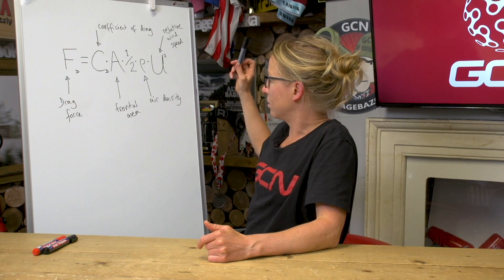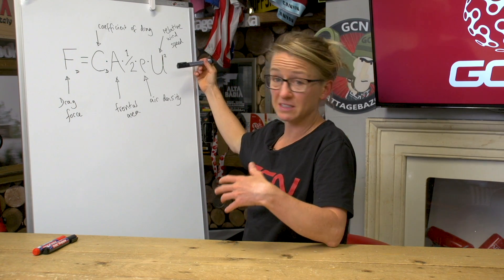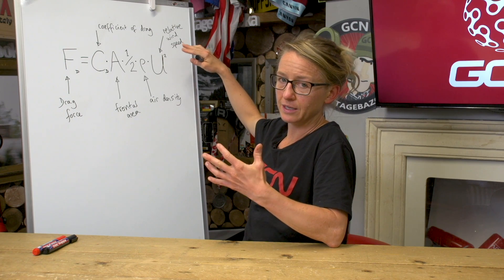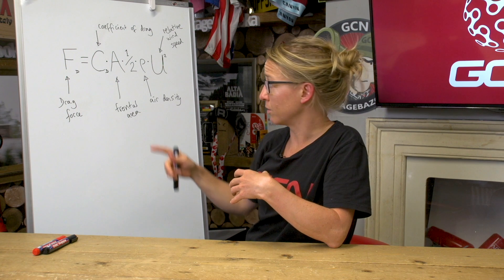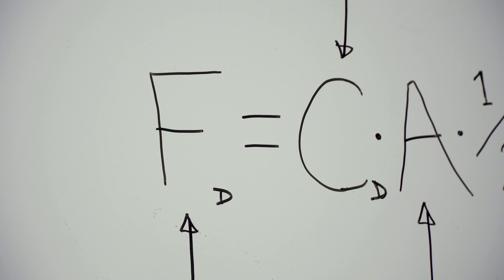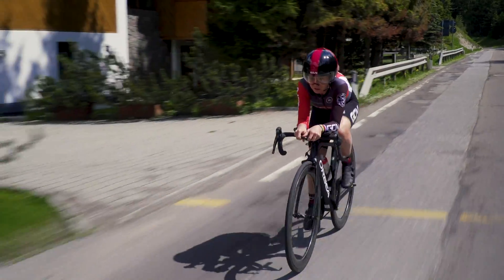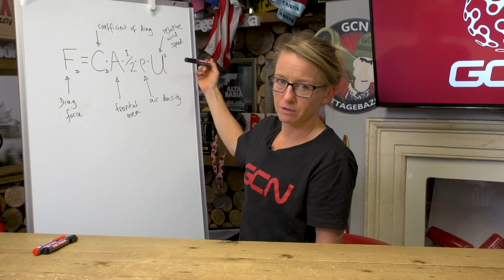How do we go about reducing drag force? Starting on the right-hand side of the equation, we could reduce U — but the faster you ride, the more drag works against you, and it's worse than that because drag force increases with the square of relative wind speed. It's a nonlinear relationship. Slowing down would lower your drag force, but that's kind of not the point. At 54 kilometres an hour, drag force is about 90% of the resistance, which is why getting aero is especially important — not just for time trialists, but for sprinters and any cyclist wanting to go faster.